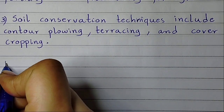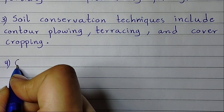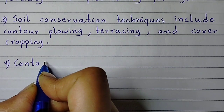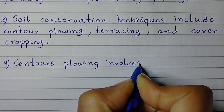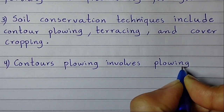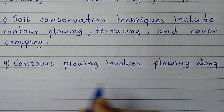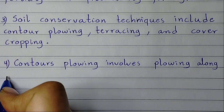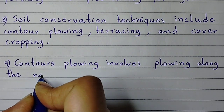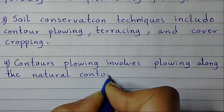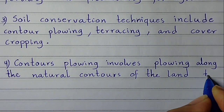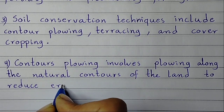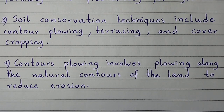Point number four: contour plowing involves ploughing along the natural contours of the land to reduce erosion.